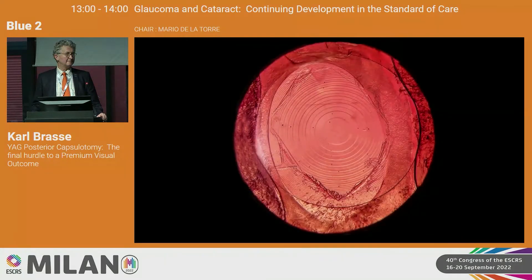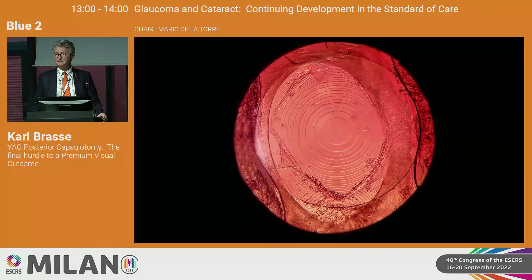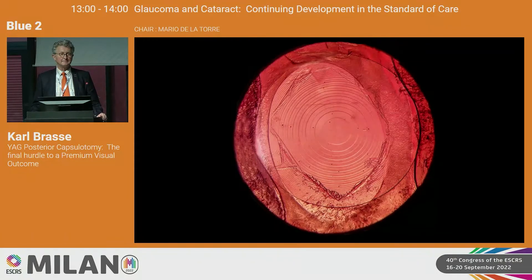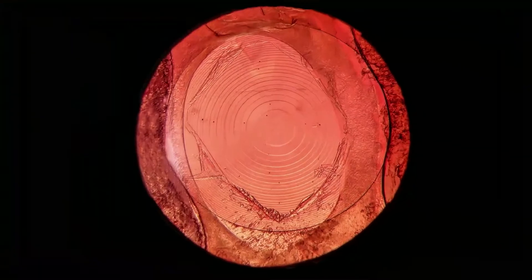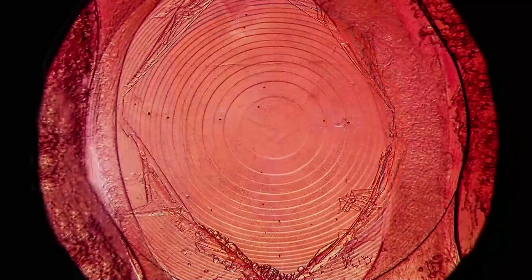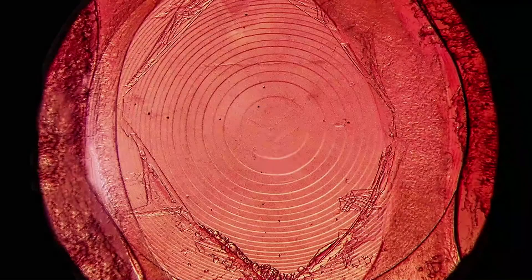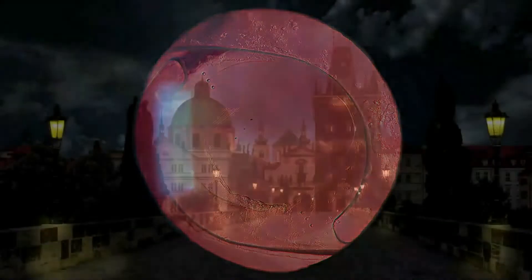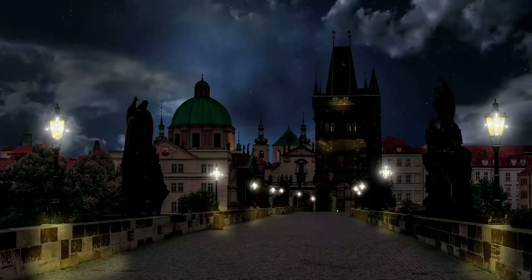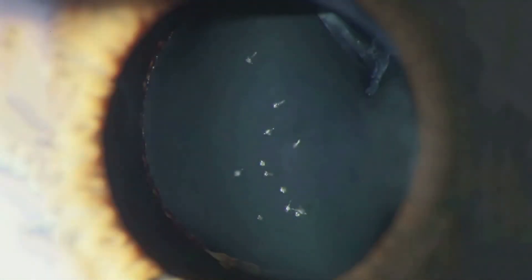One of the YAG laser treatment options is the Cruciate Pattern Technique. The YAG laser is used to create a cross pattern which allows the capsule flaps to retract out of the visual axis. Care must be taken to aim the laser beam carefully to avoid pitting the optic. IOL pits in the optical axis can lead to disturbing light effects.